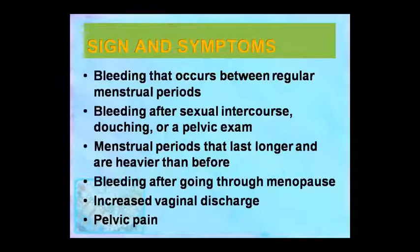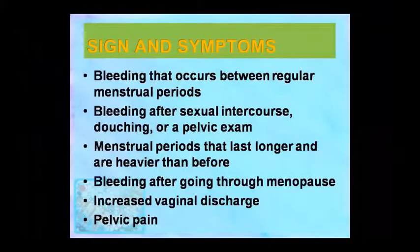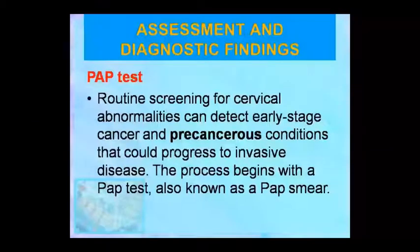A menstrual period that is very long and very heavy with a lot of flow is also a sign of cervical cancer. After the menstrual period, increased vaginal discharge and persistent pelvic pain are all signs of cervical cancer.